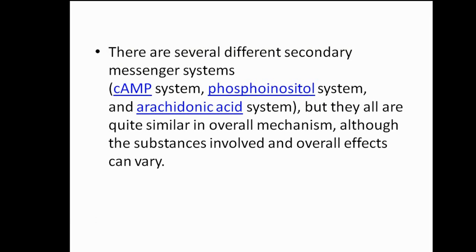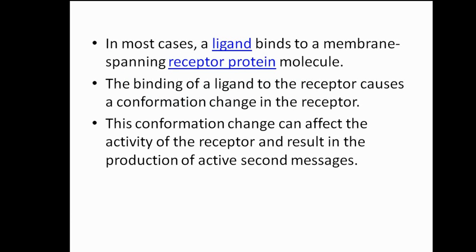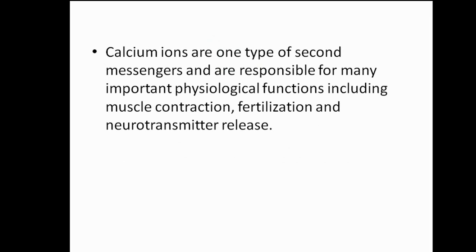There are several different secondary messenger systems, but they all share a similar overall mechanism, though the substances involved and overall effects can vary. In most cases, a ligand binds to a membrane-spanning receptor protein, causing conformational changes that result in the production of active second messengers. Calcium ions are one type of second messenger responsible for many important physiological functions including muscle contraction, fertilization, and neurotransmitter release.